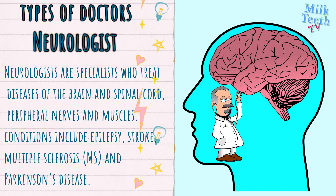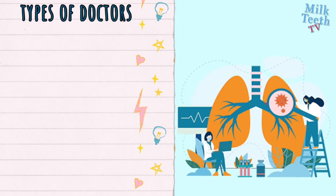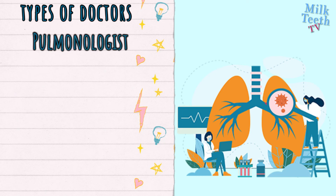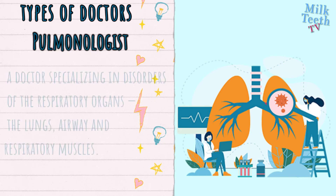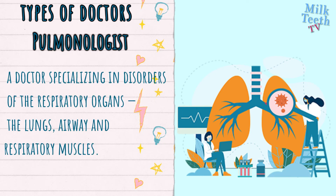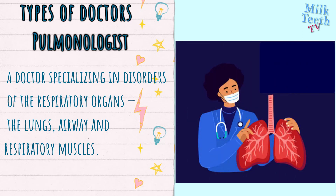Conditions treated by neurologists include epilepsy, strokes, multiple sclerosis, and Parkinson's disease. Pulmonologist: a doctor specializing in disorders of the respiratory organs — the lungs, airway, and respiratory muscles.